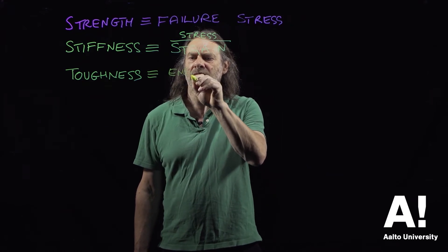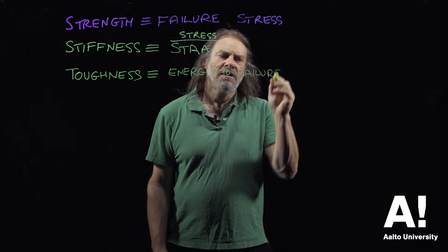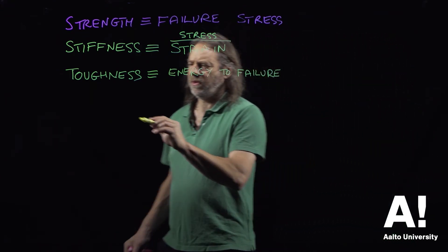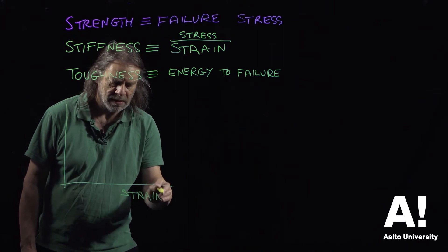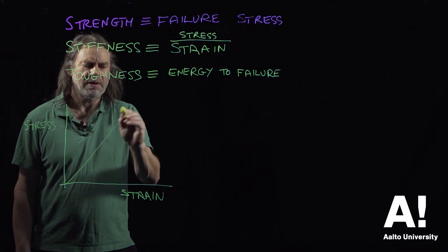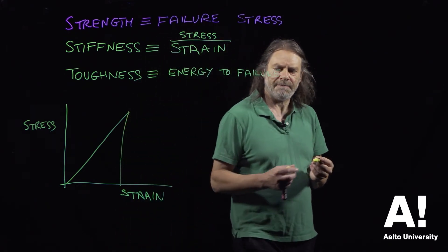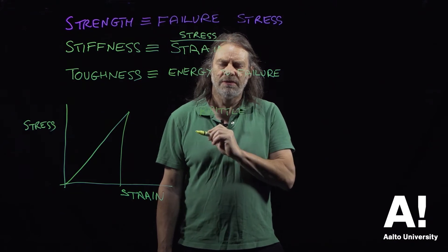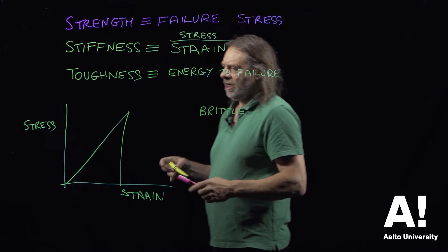Toughness is equivalent to the amount of energy expended to failure, but it's also related to the failure mode. If we look at a stress-strain diagram showing nice linear Hookean behaviour and then sudden failure, that is characteristic of what would be known as a brittle material. Toughness is related to the mode of failure - not just the amount of energy that goes into the failure, but how it fails.